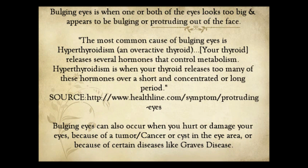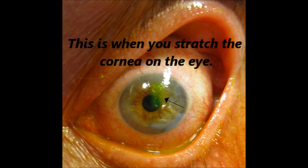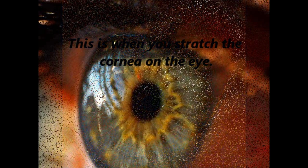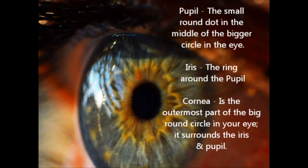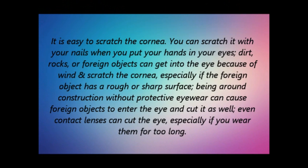Next is corneal abrasion. This happens when you scratch your cornea. It is easy to scratch the cornea — dirt, rocks, or foreign objects can get into the eye and cut them, especially if the foreign object has a rough or sharp surface like rocks. Being around construction without protective eyewear can also cause foreign objects to enter the eye. Even contact lenses can cut the eye, especially if you wear them for too long. Even makeup brushes or eyeliner pens or pencils can scratch the cornea if they get into the eye or become hard.